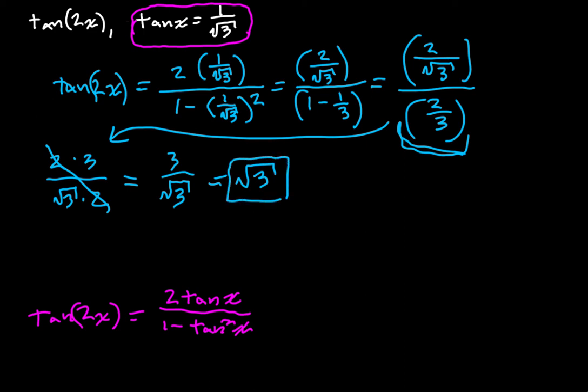That is the tangent of twice our angle, and what might be an easier way to solve this problem? You know, this stuff wasn't actually necessary, but I think it helps to kind of verify stuff we've learned in the past. What angle has a tangent of one over the square root of three? Well, that's 30 degrees, or pi over six radians.